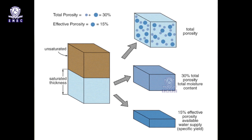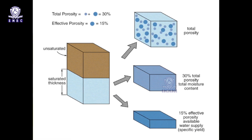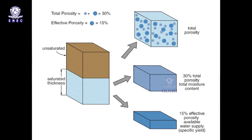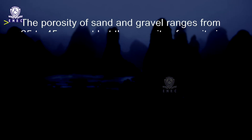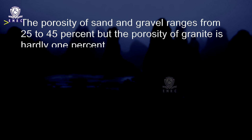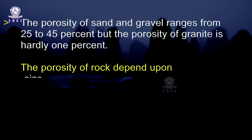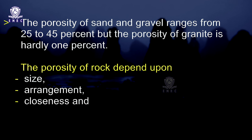Porosity of the rocks: The amount of water locked up into the rocks depends upon the porosity of the rock. The ratio of the total volume of open spaces in the rocks to the total volume of the rocks is called porosity. The porosity of sand and gravel ranges from 25 to 45 percent, but the porosity of granite is hardly 1 percent. The porosity of rock depends on size, arrangement, closeness and compaction. The seeping water dissolves the salts present in the rock and increases their porosity.